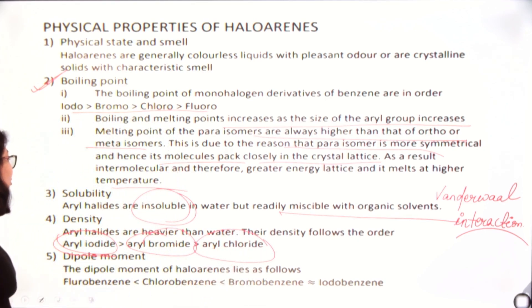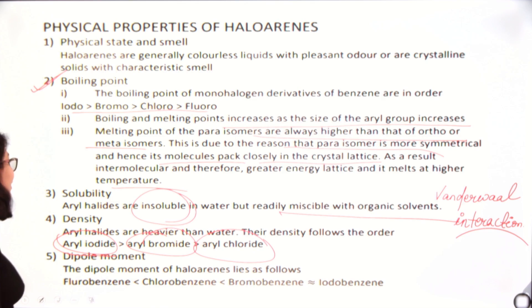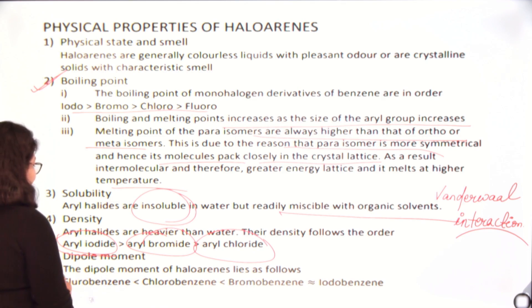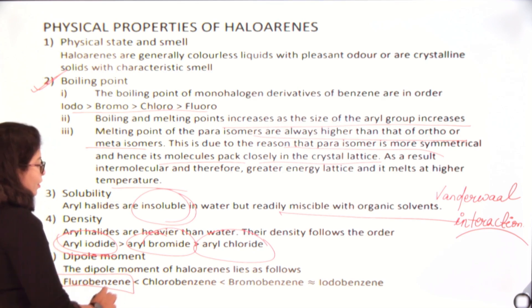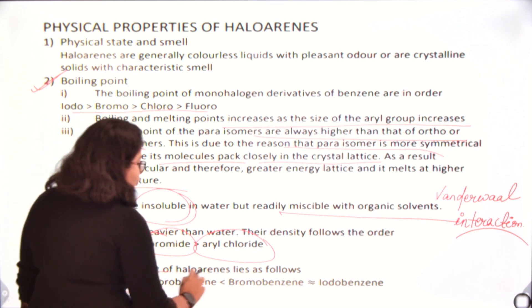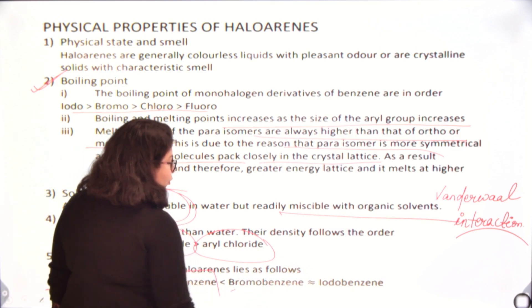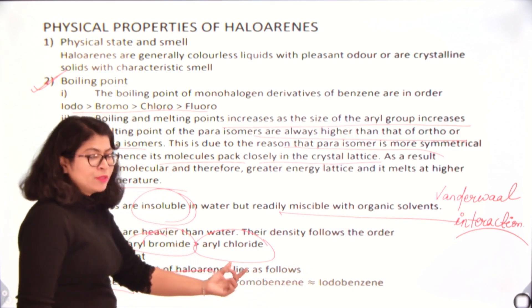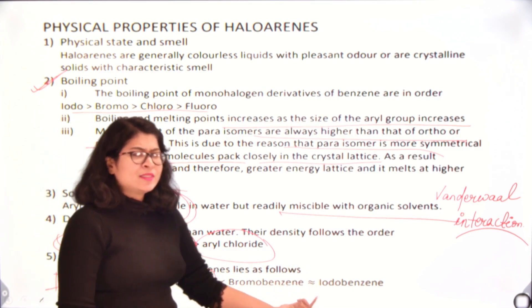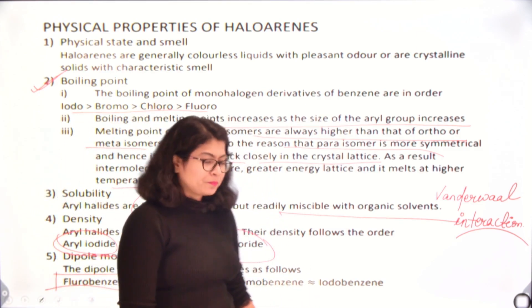Regarding dipole moment, chlorobenzene has the least dipole moment and it goes on increasing from chloro to bromo to iodo, with bromo and iodo having nearly the same dipole moment.